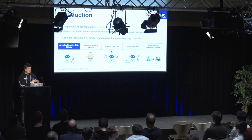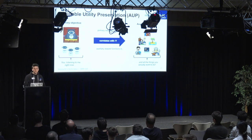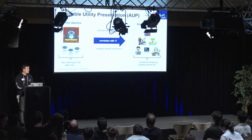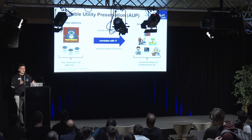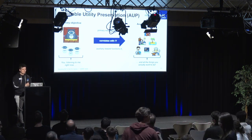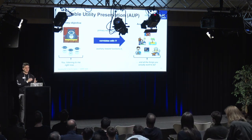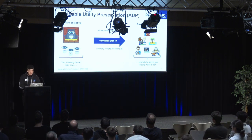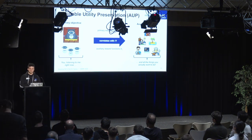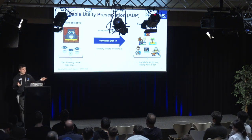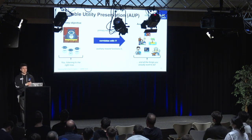With this talk I want to focus on the first main pillar: how to avoid negative side effects. One way to achieve this implicitly is called Attainable Utility Preservation, or AUP for short. To frame what AUP does, consider yourself right now: imagine you're all reinforcement learning agents and your goal right now is to sit here and listen to my talk.